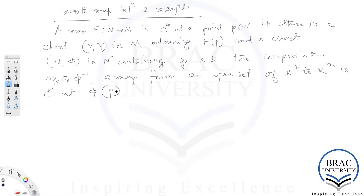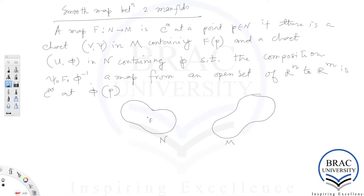Let me draw a picture for this definition of smooth map between two manifolds. Let this denote the manifold N and this figure denote manifold M. A point P is contained in an open set U, and there is this map F from manifold N to manifold M. The image of P under F is F of P, which is contained in this open set V.